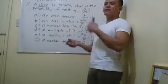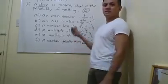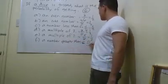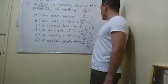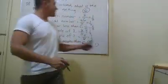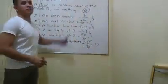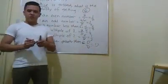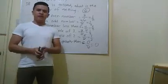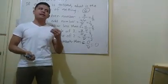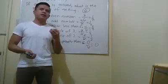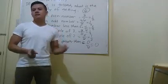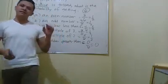A number greater than six — do we have a number greater than six? There is none. So that is zero over six, or just zero. That's the basic on probability. I'll begin to discuss more on probability in elective groups and mathematics major. So there you go, bye-bye, that's all for now.